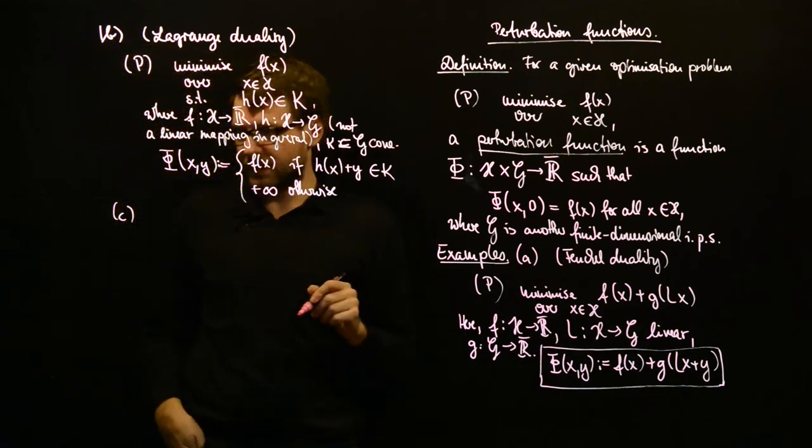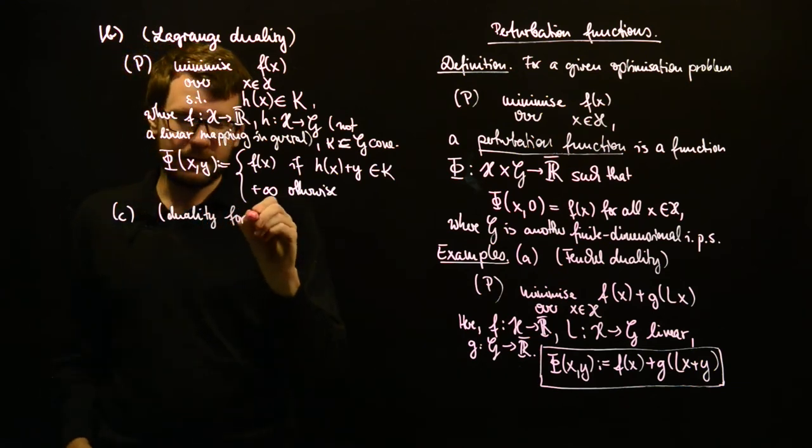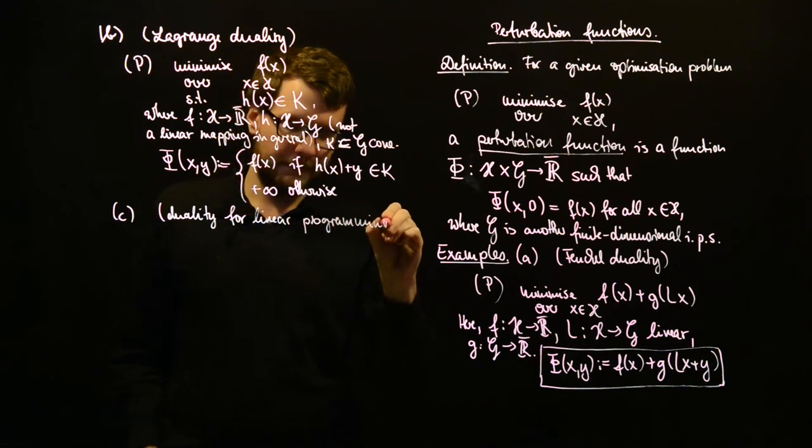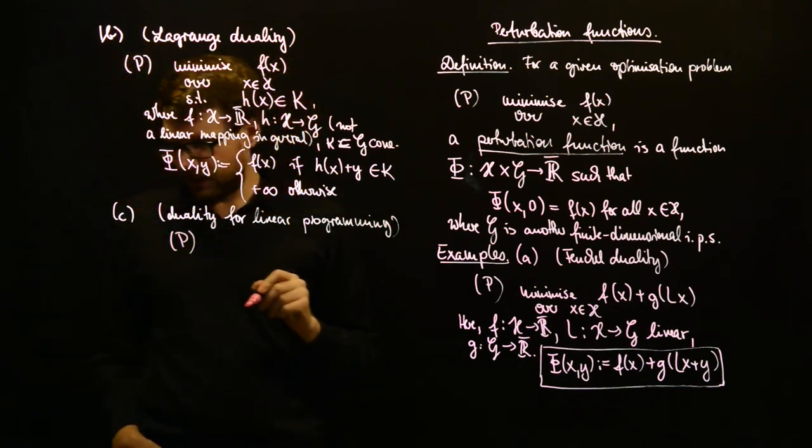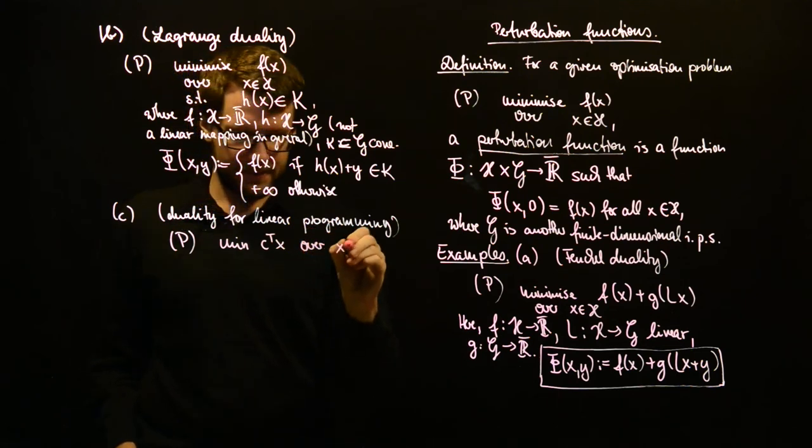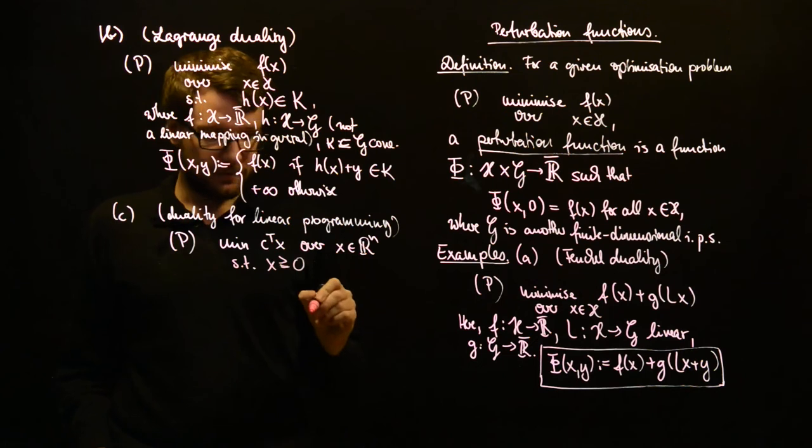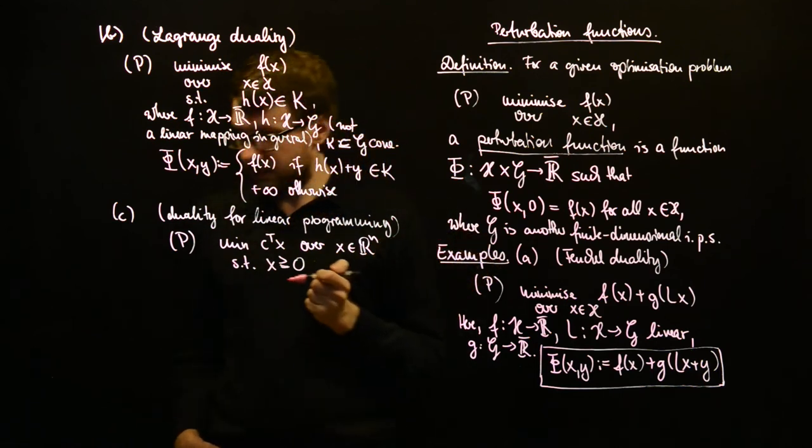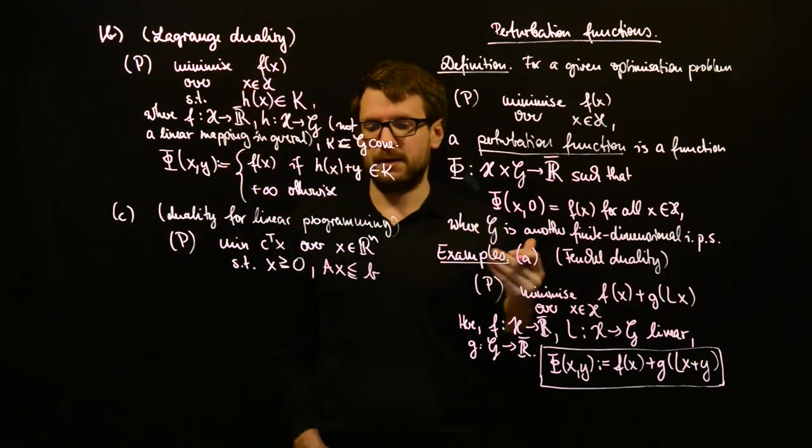And I want to just specialize this a bit to make it more accessible. And this is, this might be more familiar. So, this will be duality for linear programming. This is a special case of this. And there are various equivalent ways of formulating a linear program. One of them is minimize C transpose x over x in R^n such that x is component-wise or entry-wise non-negative.